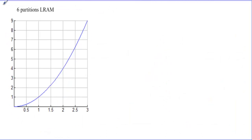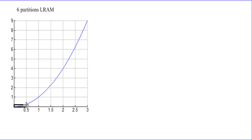What about six partitions? We go from zero to three with six partitions, so instead of the base being one, the base is one half. Using LRAM, the first rectangle has height zero.